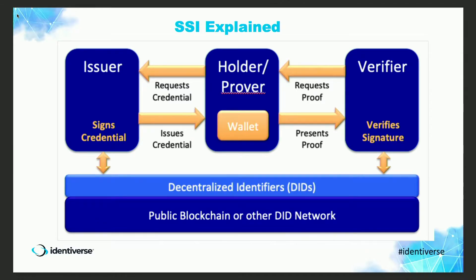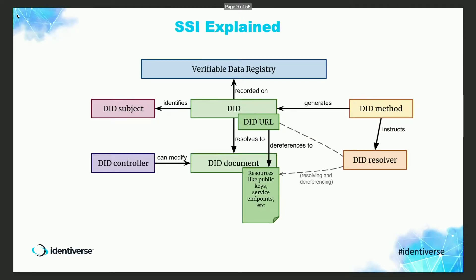Self-sovereign identity: this is a classic SSI diagram where you have on the left the issuer that creates a credential, the holder who is given the credential by the issuer, and the holder can choose which verifiers to share with. Below is a key aspect of the technology — where you look up public keys posted by the issuer and used by the verifier — and you also have trust registries in this layer to figure out who the issuer is and whether you should trust them.